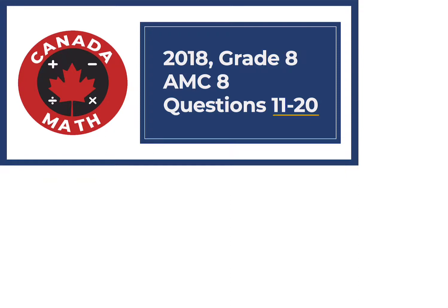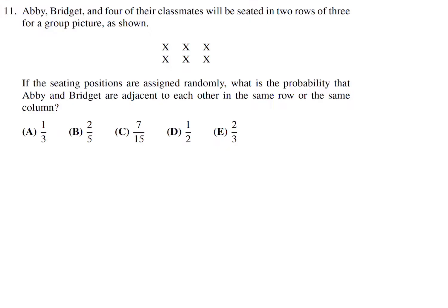Questions 11 through 20 on the 2018 Grade 8 AMC 8. Abby, Bridget, and four of their classmates will be seated in two rows of three for a group picture as shown. If the seating positions are assigned randomly, what is the probability that Abby and Bridget are adjacent to each other in the same row or in the same column?